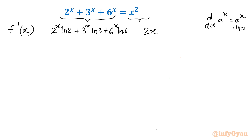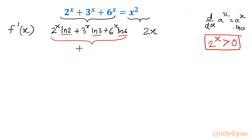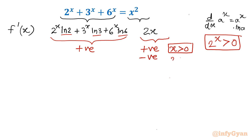Now we can draw some logical conclusions. We know that 2^x, or any exponential function, is always positive. ln2, ln3, and ln6 are positive constants. So the left-hand side derivative is always positive. The right-hand side, 2x, is positive when x is positive and negative when x is negative.